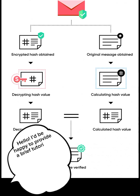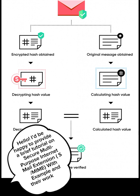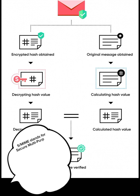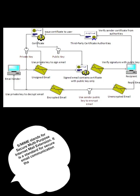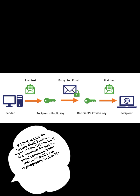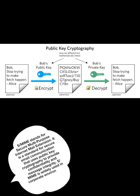Hello, I'd be happy to provide a brief tutorial on Secure Multipurpose Internet Mail Extension with examples and their working in simple terms. S-MIME stands for Secure Multipurpose Internet Mail Extension. It is a standard for secure email communication that uses public key cryptography to provide confidentiality and message integrity. S-MIME is widely used in corporate environments and by individuals who need to send and receive sensitive information over email.